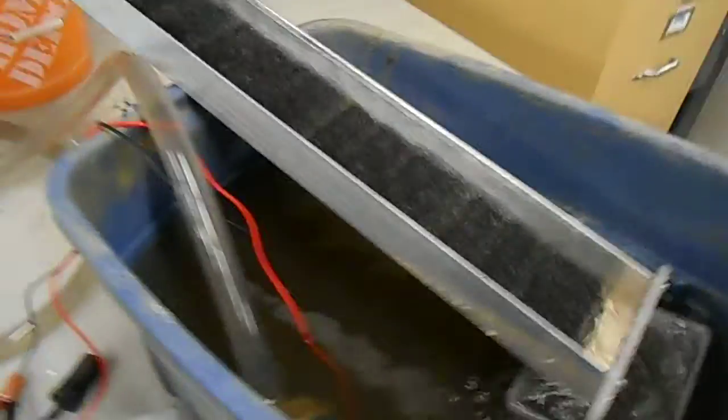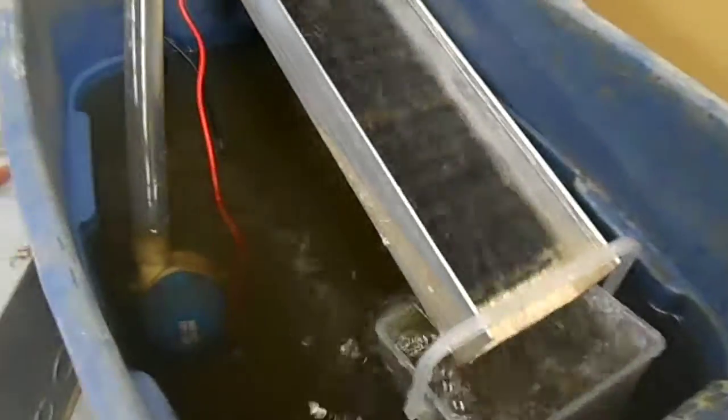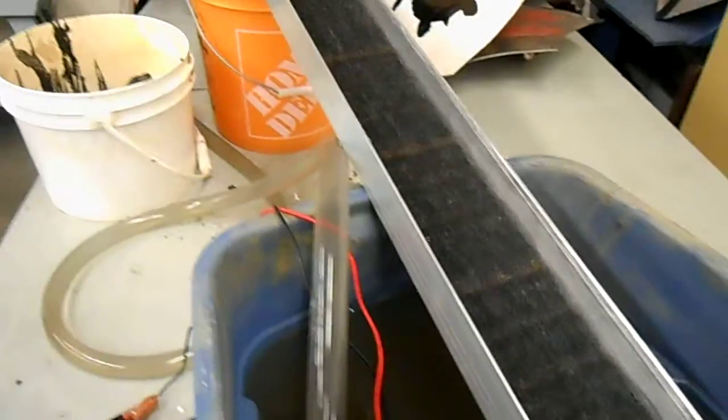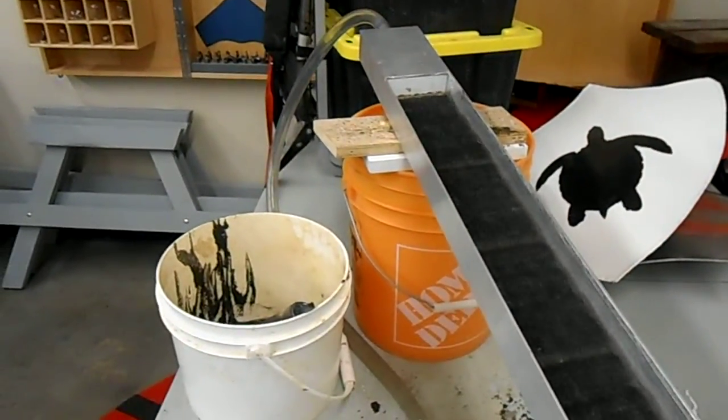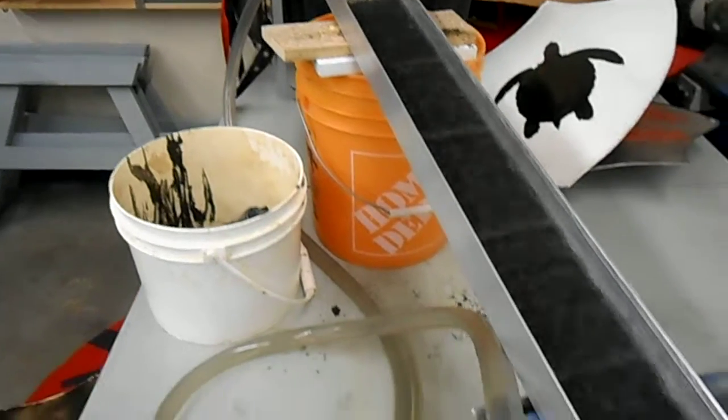I tested the last run of the Fraser and I'd say 90% of my gold was up in the matting or up in the Gold Hog mats. Very little left down in the miner's moss and expanded steel.